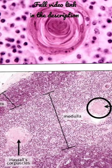Next, we'll see about the Hassall's corpuscle. These are small rounded structures present in the medulla of the thymus.